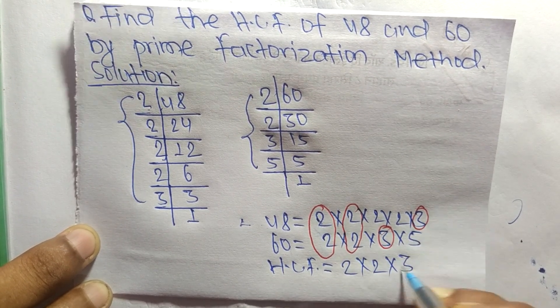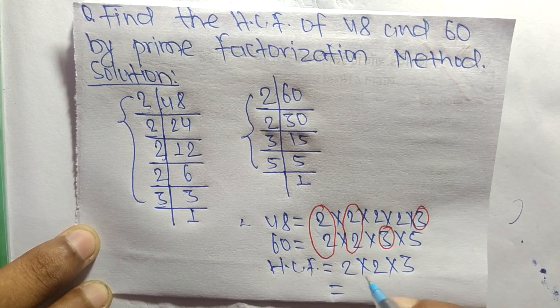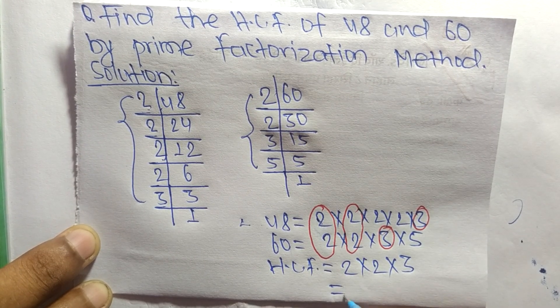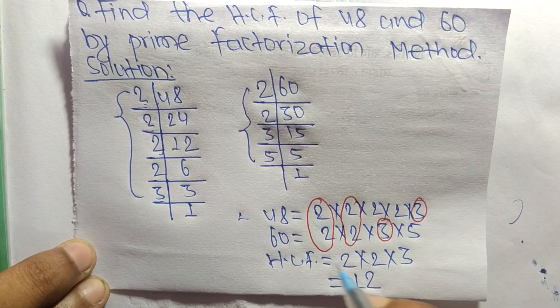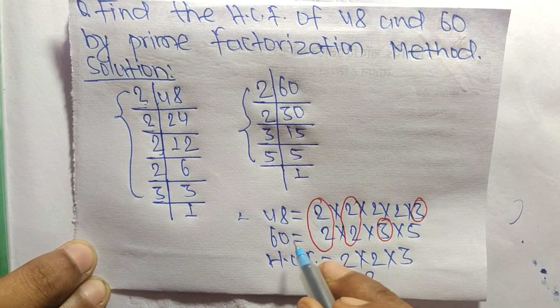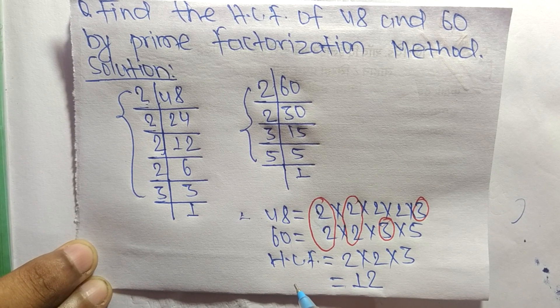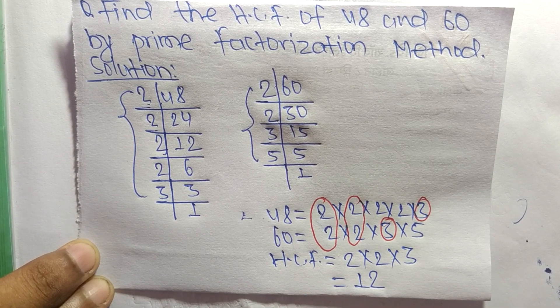So 2 times 2 equals 4, and 4 times 3 equals 12. Therefore, 12 is the HCF of 48 and 60. So this is it for today. Thanks for watching.